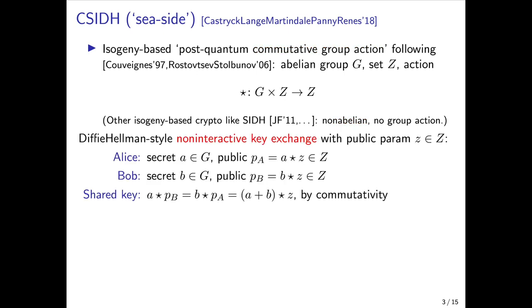One of the advantages of having a commutative group action is that it allows for a very simple Diffie-Hellman style key exchange. Here we have a public parameter Z in the set capital Z, and Alice and Bob each have their respective secret keys in the group, and their public key is the action of their secret key on the public parameter. Then they can each agree upon a common shared key by taking their own secret key and acting upon the public key of the other party, which yields A+B star Z by commutativity.